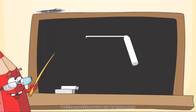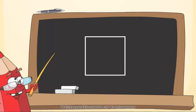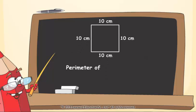Let's find perimeter of square tile. Length of each side is 10 cm. Perimeter of tile is 4 into 10 cm, which is equal to 40 cm.